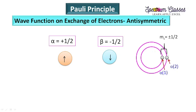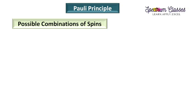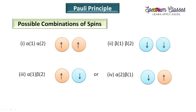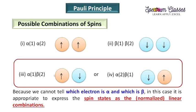If one electron is in the alpha state, its spin wave function is alpha(1), and alpha(2) for the second electron. The overall spin wave function psi_spin(1,2) = alpha(1)·alpha(2) when both electrons have up spins. There are several other possible spin combinations. Since we have two electrons, there are four possible combinations: alpha·alpha (both up), beta·beta (both down), alpha(1)·beta(2), and alpha(2)·beta(1).